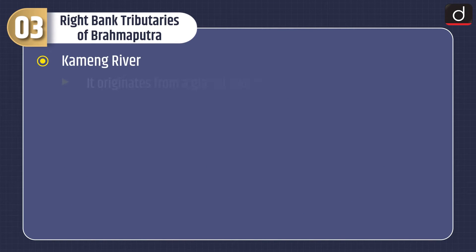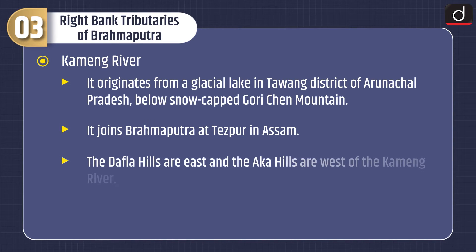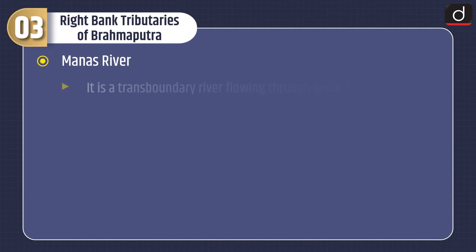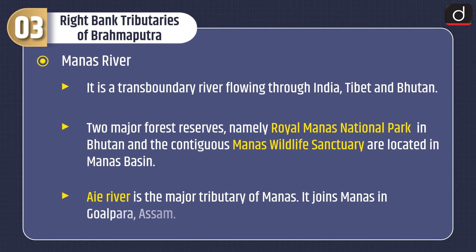Next is the Kameng river, which originates from a glacial lake in the Tawang district of Arunachal Pradesh, below the snow-capped Gori Cheng mountain. It joins the Brahmaputra at Tezpur in Assam. The Dafla hills are to the east and the Aka hills to the west of the Kameng river. It forms a boundary between the Sessa and Eagle Nest sanctuaries to the west and the Pakke Tiger Reserve to the east. Next is the Manas river, a trans-boundary river flowing through India, Tibet, and Bhutan. Two major forest reserves — the Royal Manas National Park in Bhutan and the contiguous Manas Wildlife Sanctuary — are located in the Manas basin. It joins the Brahmaputra in Goalpara, Assam.